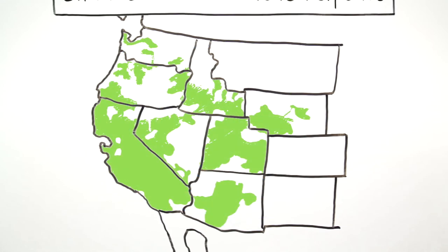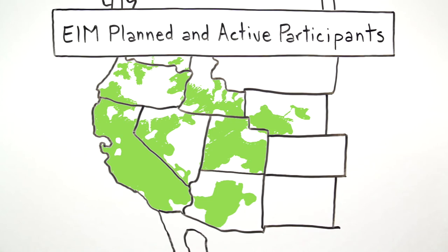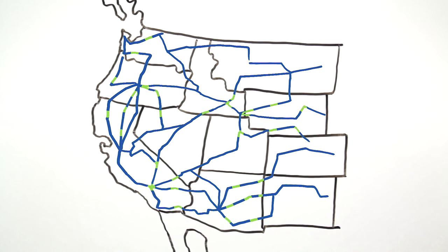A similar approach has already proven successful through the ISO's Western Energy Imbalance Market. This real-time, hour-ahead market shares surplus energy region-wide instead of reducing or turning off renewable plants.